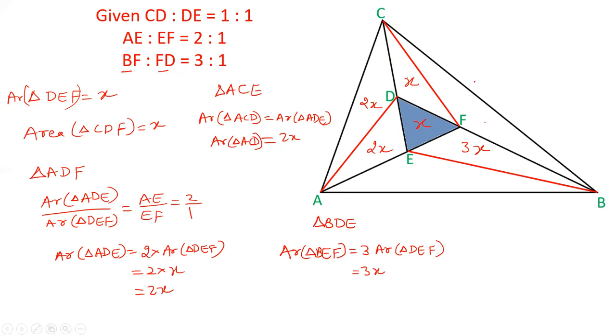In the same way, if I take triangle BCD, the ratio of BDE and BDF will be the ratio of BF and FD, which is 1:3. So area of triangle CBF is in the ratio 1:3. CDF is already given as X, so area of triangle CBF is 3X. This triangle is 3X.